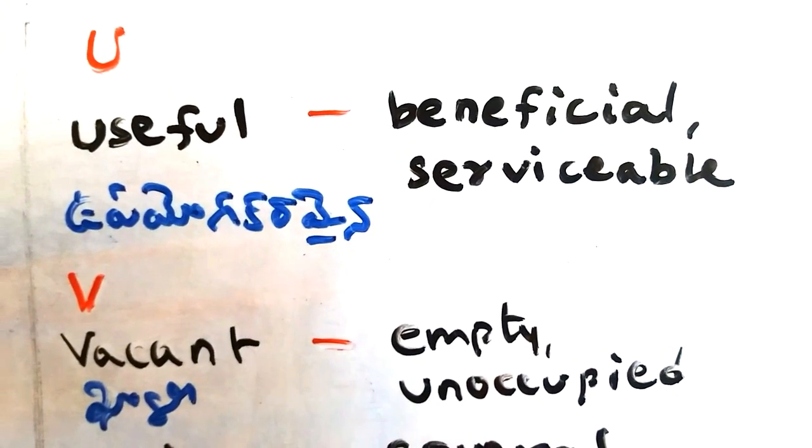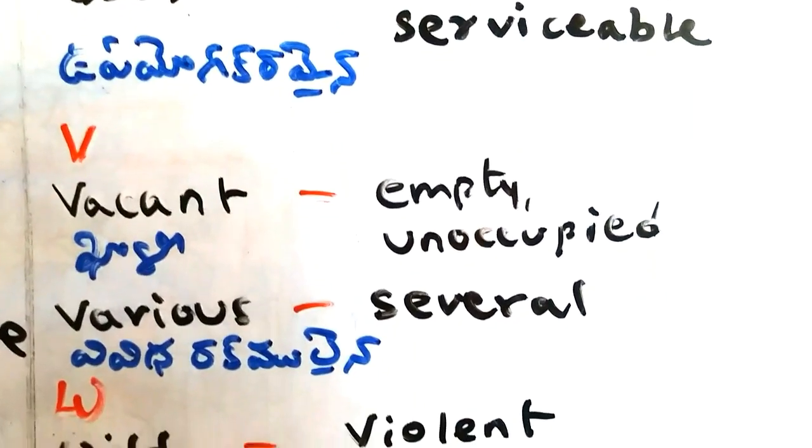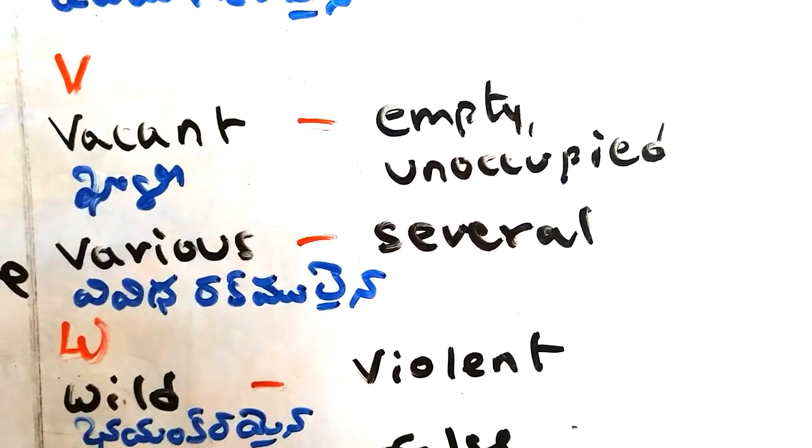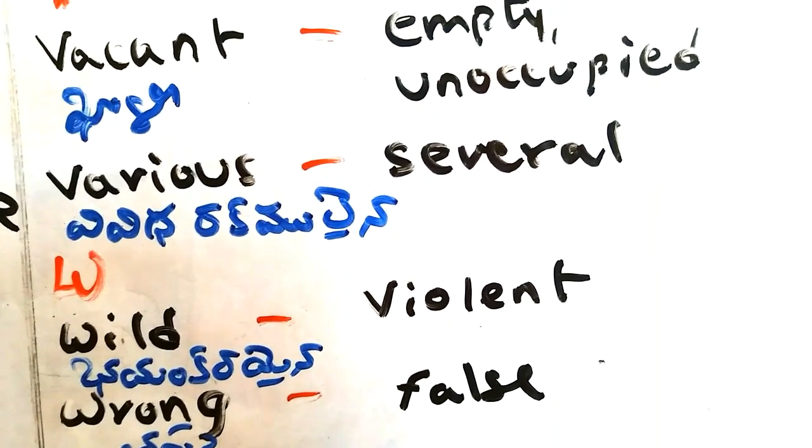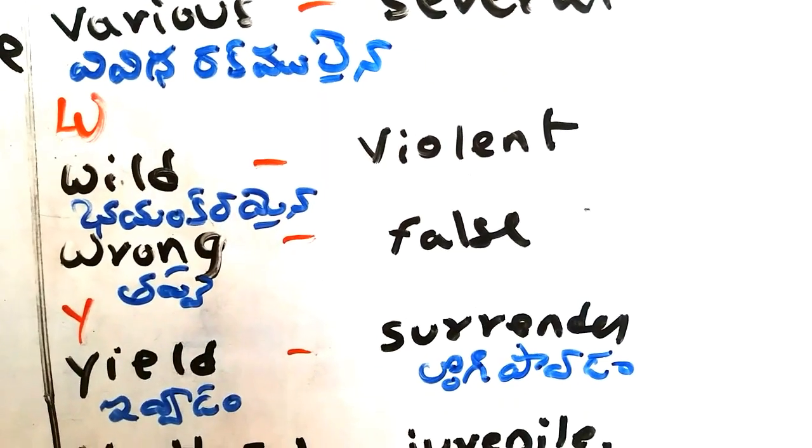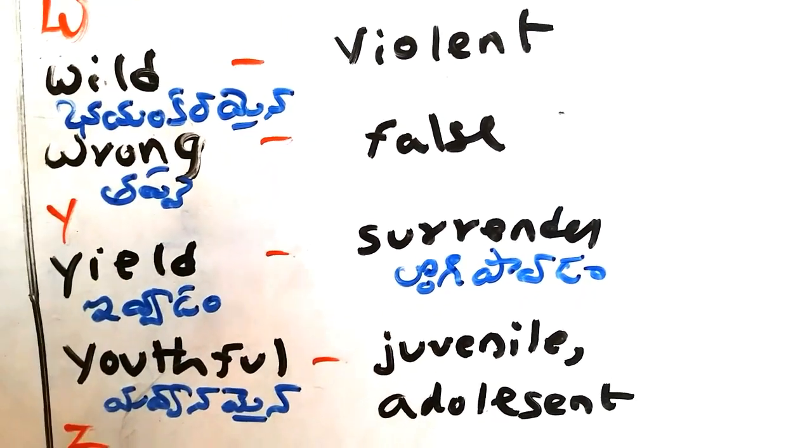Useful - upeakkaramayana, beneficial, serviceable. Vacant - kali, empty, unoccupied. Various - vividakrakamayana, several. Wild - bayaankaramayana, violent. Wrong - thappu, false.